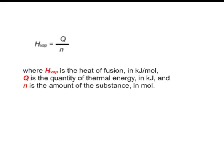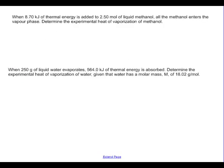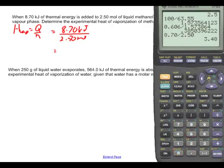The same approach applies to calculating the heat of vaporization — the formula is identical: heat of vaporization = Q / N. Example five: when 8.70 kilojoules of thermal energy is added to 2.50 moles of liquid methanol, all the methanol enters the vapor phase. Determine the experimental heat of vaporization of methanol. Q = 8.70 kilojoules, N = 2.50 moles. Dividing: 8.70 ÷ 2.50 = 3.48 kilojoules per mole for methanol.